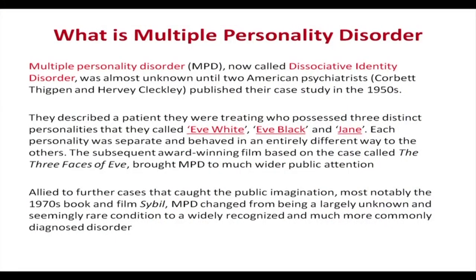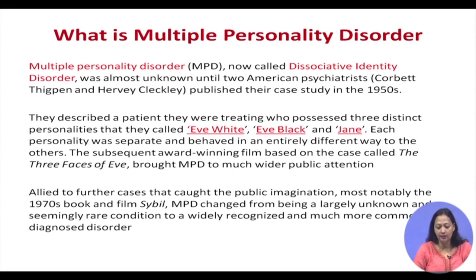So what is multiple personality disorder? It is now called dissociative identity disorder, and it was almost unknown until it was published by Thigpen and Cleckley in the 1950s. They spoke about a patient who reported to them as Eve White. Gradually, another personality emerged — very different from Eve White — who called herself Eve Black. Then a third personality emerged and called herself Jane. Mind you, it is just one person. Eve White, Eve Black, and Jane are all three personalities belonging to one whole individual.